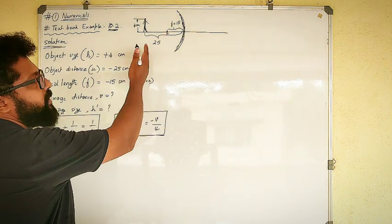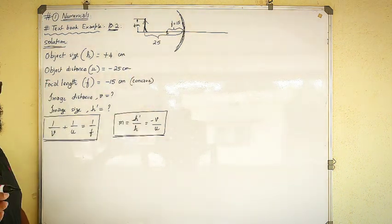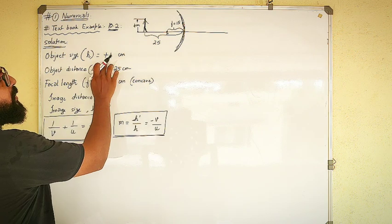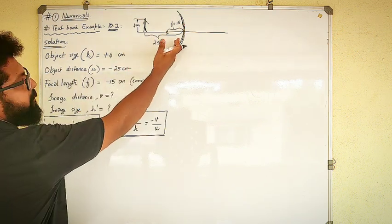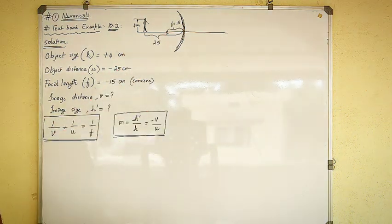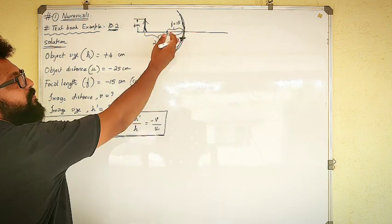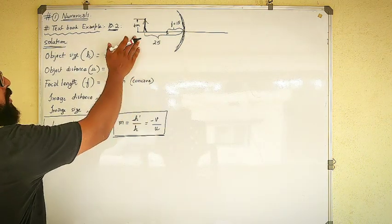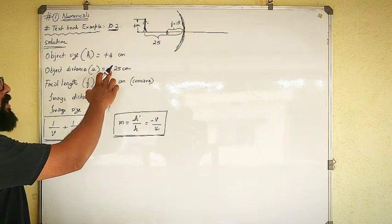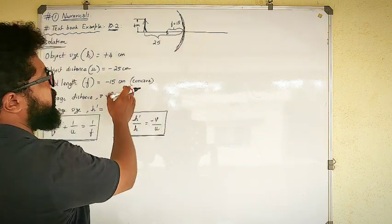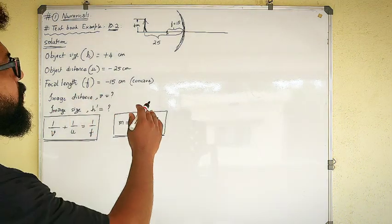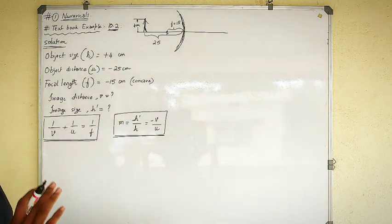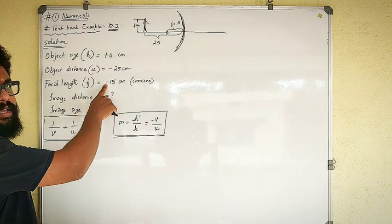According to the sign convention we learnt yesterday: the object size is above the x-axis, so it is plus 4 cm. The object distance is to the left side of the concave mirror, so it is minus 25 cm. The focal length of a concave mirror is also to the left side, so that is minus 15 cm. For a convex mirror, the focal length would be positive, but here it is a concave mirror, so the focal length is negative.